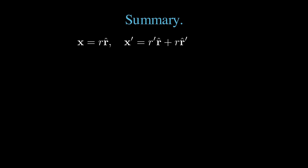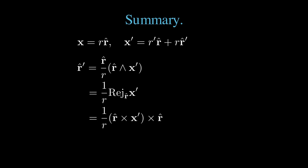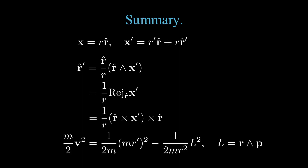To summarize: given x equals r times r̂, we found that x prime equals r prime r̂ plus r r̂ prime. We found a geometric algebra expression for r̂ prime: r̂ prime equals r̂ divided by r times the wedge of r̂ with x prime — that's 1 over r times the rejection of r̂ from x prime, all the non-radial components of x prime. We also found the conventional triple cross product representation of r̂ prime. Finally, we found an expression for the kinetic energy: 1 over 2m times m r prime squared minus 1 over 2m r squared times the angular momentum squared, where m r prime is the radial component of the particle's momentum and l is the angular momentum r wedged with p.